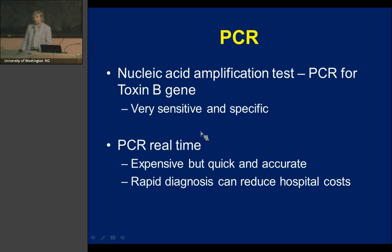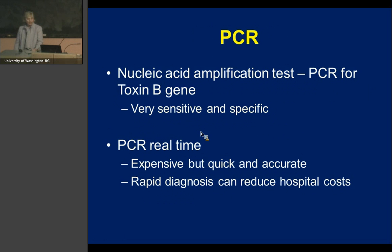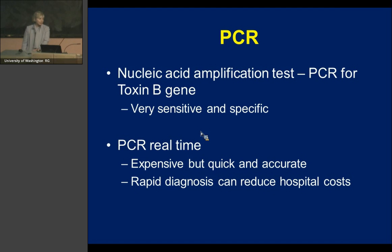Our lab has been at the forefront of developing PCR testing for toxin B and was one of the early institutions to publish on its usefulness. This is a nucleic acid amplification test — real-time PCR — and it is expensive, but quick and accurate. The literature suggests that, even though it is expensive, it will probably save money in the long run because you diagnose, treat, and isolate cases earlier, thereby reducing overall hospital costs.